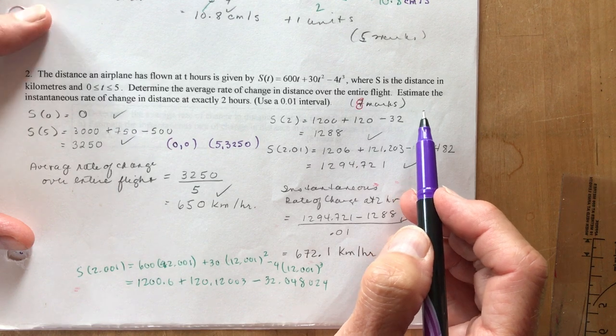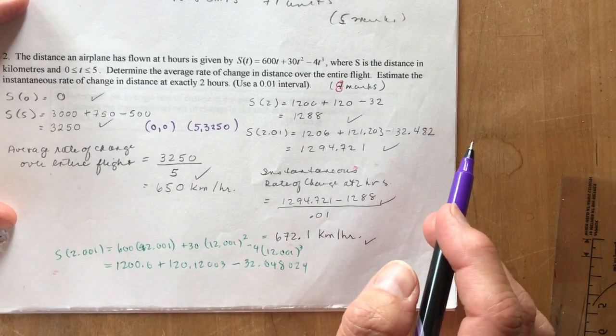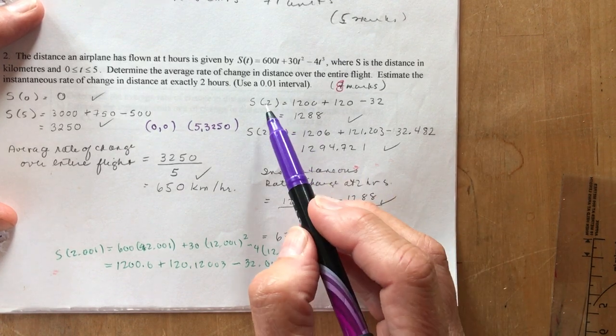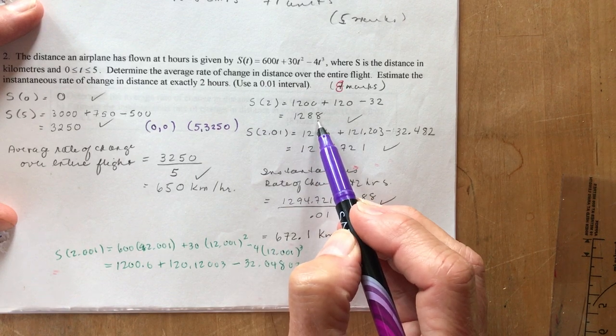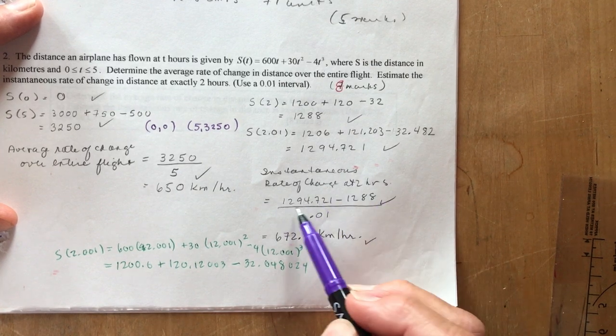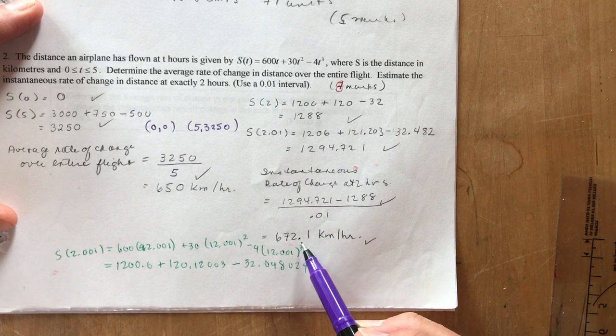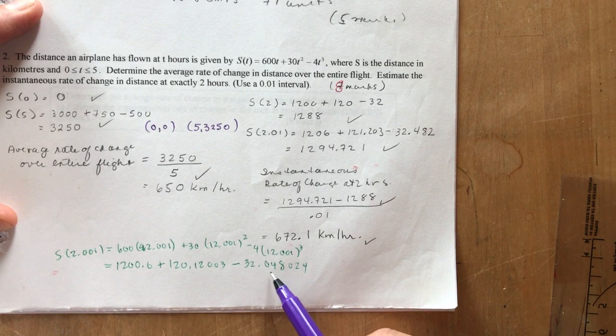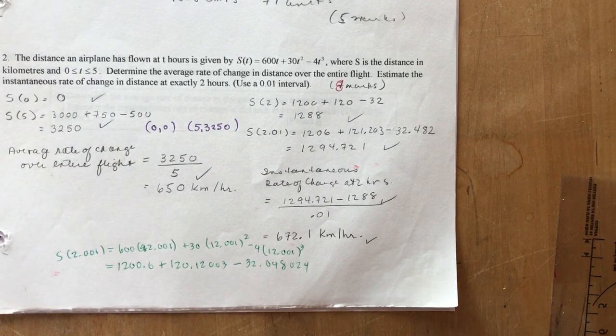The second one says determine the instantaneous rate of change at 2 seconds using a 0.01 interval. Now don't worry about following or preceding—do following, just do the following interval because it's x and x plus h we're using here. So I did 2 and I found my y coordinate, I did 2.01 and I found my y coordinate, and the instantaneous rate of change at 2 hours equals rise over run, and I get approximately 672.1 kilometers per hour. Not sure what all this stuff is here—I guess that's showing all the decimals when I did it and I rounded it. That's a good little practice for you.